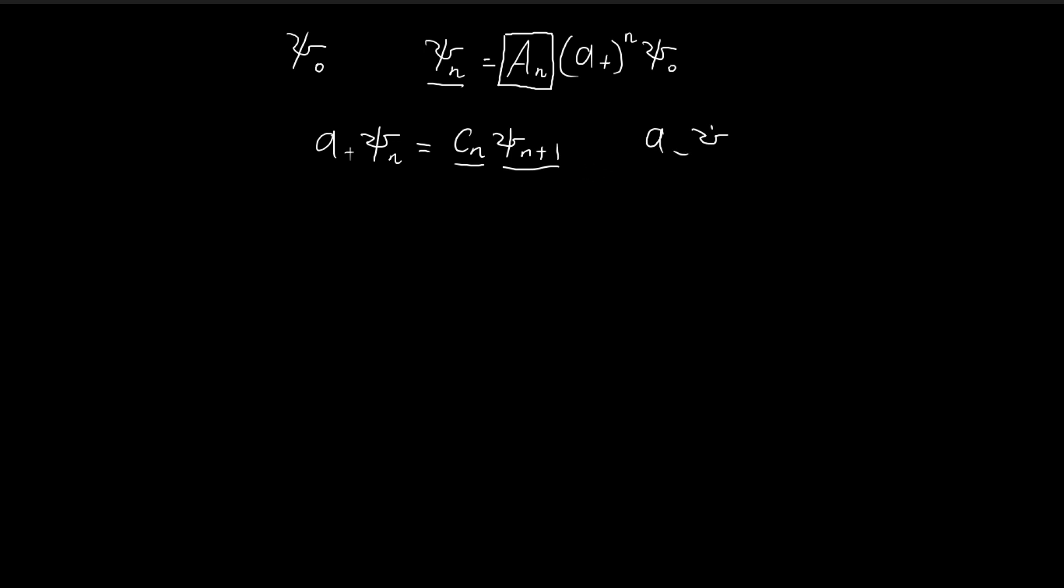And the same thing applies for the minus operator as well. So if I apply the minus operator to ψₙ, I'm going to get some constant multiplied by ψₙ₋₁. So I'm going to shift our focus to finding these two constants. Once we've found cₙ and dₙ, we can use it to deduce what aₙ should be.